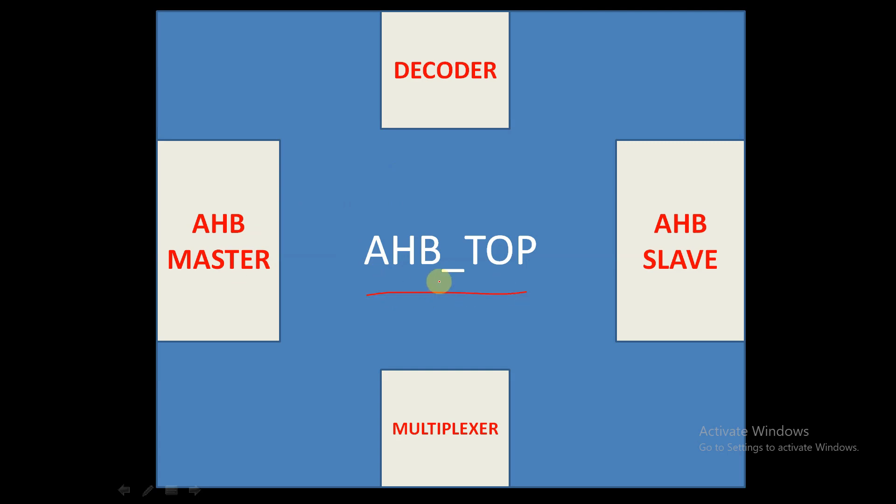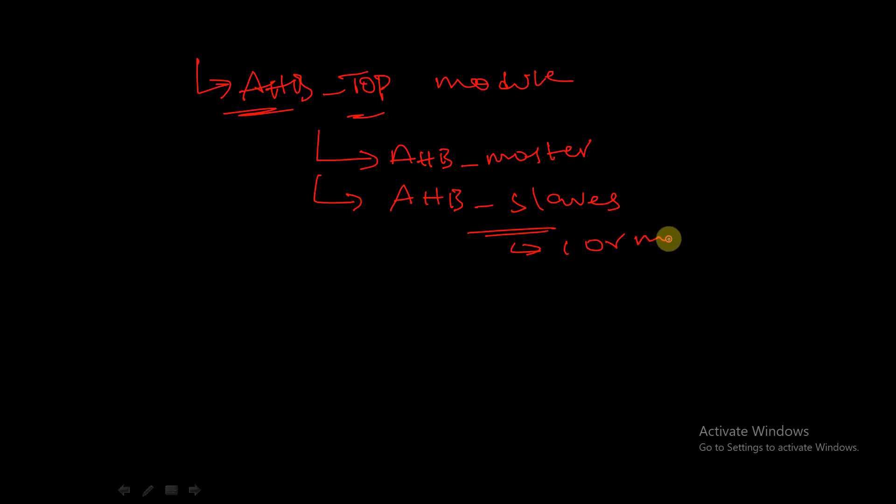We are going to develop an AHB top model. First, we will code an AHB top module which consists of further modules named AHB master and AHB slaves. There may be one or more slaves, and in our design we have only one master.